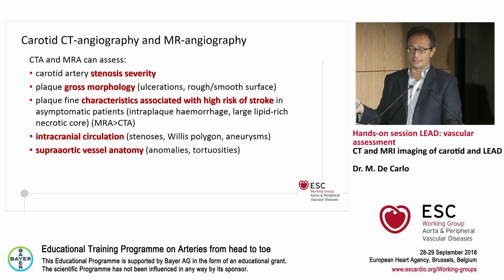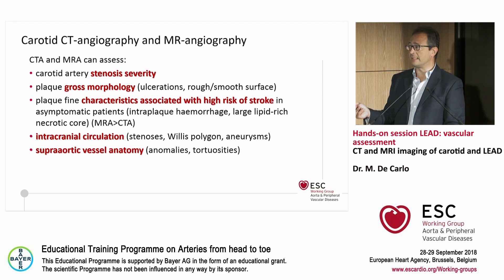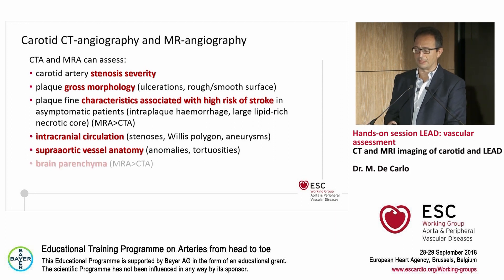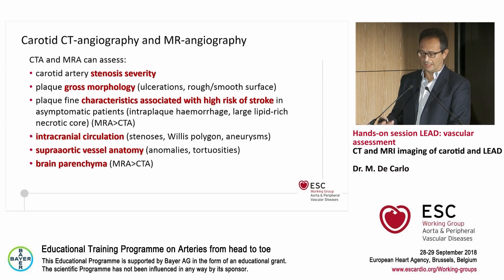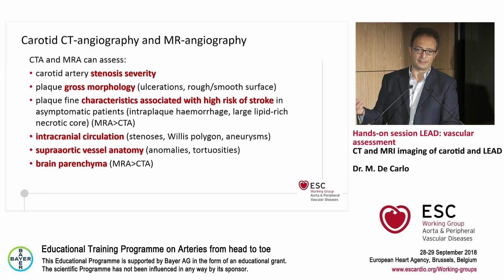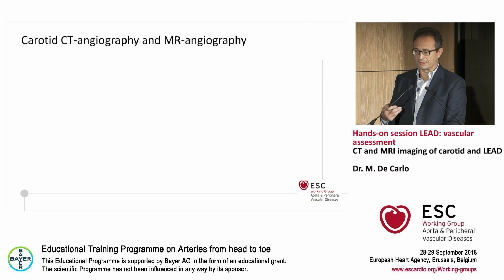Particularly important when planning carotid stenting is to assess the anatomy of the supra-aortic vessels. If you have anomalies like the bovine arch, that can make your life a little bit more difficult. And of course you can assess the brain parenchyma with both MRA in particular and CT, and have information about previous ischemic injuries to the brain.